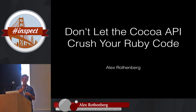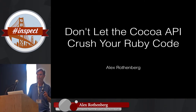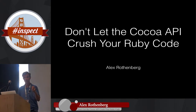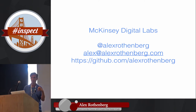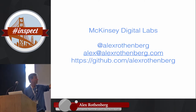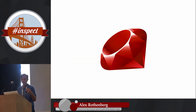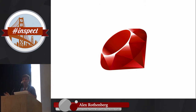My name is Alex Rothenberg. I'm going to be talking about how not to let the Cocoa API crush your Ruby code — really, how to make Ruby and Cocoa play nice together. I work for McKinsey Digital Labs, a consulting company. You can find me on Twitter, GitHub, all the usual places. Basically, I'm a Rubyist. I came into this space from the Ruby side of the world.